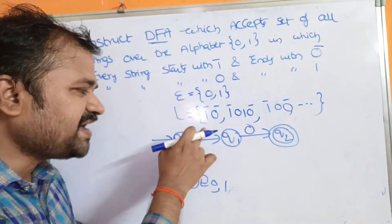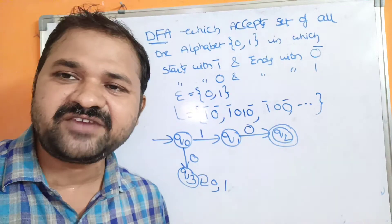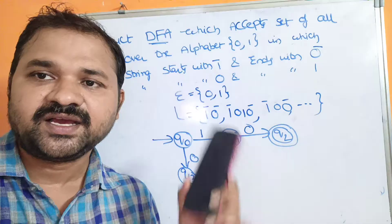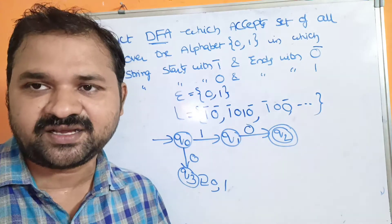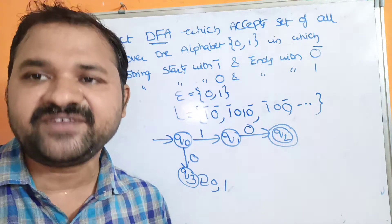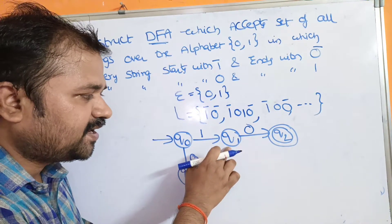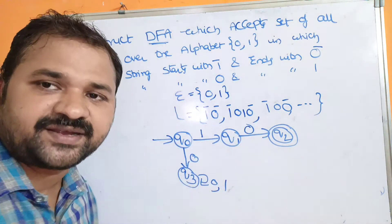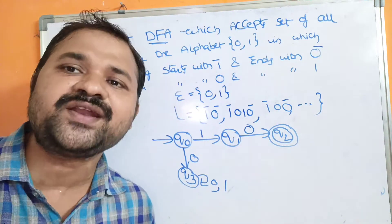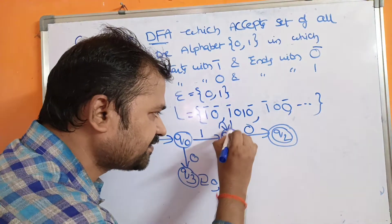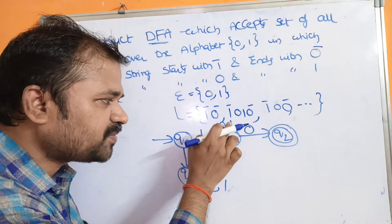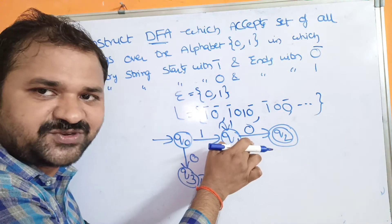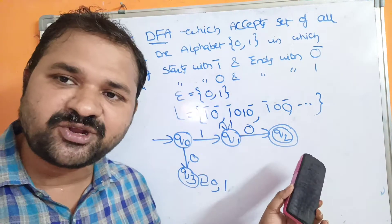On Q0 we apply both 1 and 0. In a DFA, on each state we must apply all symbols present in the alphabet — here 0 and 1. The constraint is: every string starts with 1 and ends with 0. On Q1, after 0 is applied going to Q2, we also apply 1 with a self-loop. With the self-loop on Q1 for input 1, we can still get valid strings starting with 1 and ending with 0.